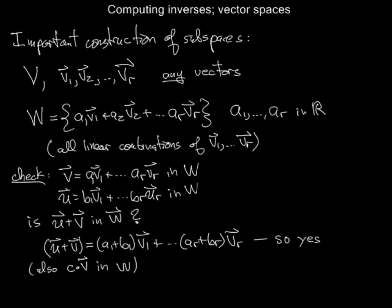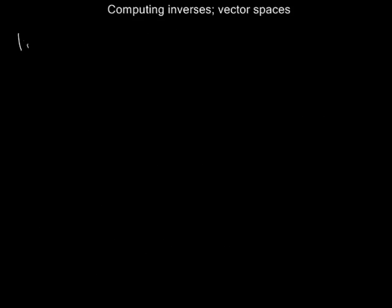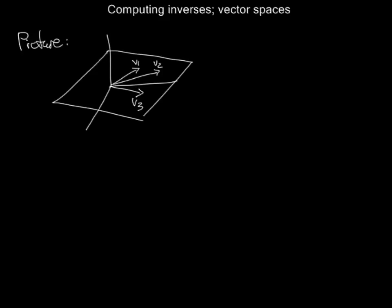So here's a picture of what's going on. In R³, you take any bunch of vectors - V1, in this case three of them - and you're taking the plane spanned by them.